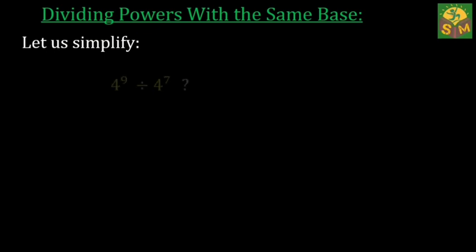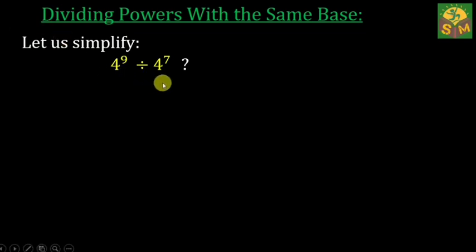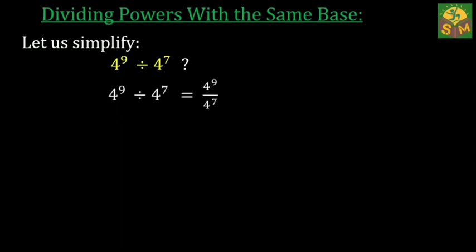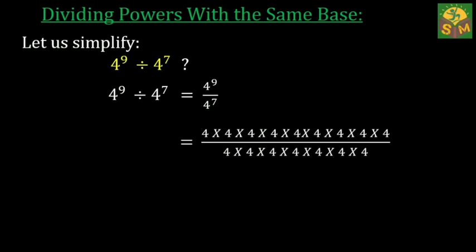What happens if you divide two numbers in exponential form with the same base? Consider the following expression: 4 raised to the power of 9 divided by 4 raised to the power of 7. First, rewrite the expression into its factors. Then you can cancel the common factors of 4 in the numerator and denominator. Finally, this expression can be written as 4 squared.